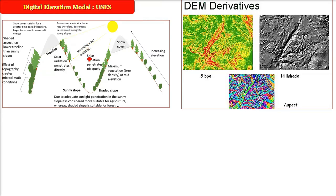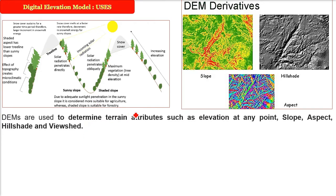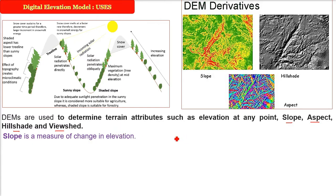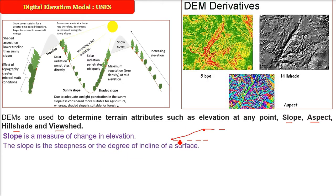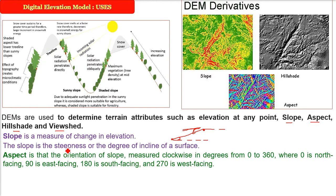What are the uses of a Digital Elevation Model? Because you get the height and the actual topography of the world, you can find out slope, aspect, hill shade, and viewshed — just a few of them. Slope is nothing but the gradient of height — it is the measure of change in elevation from one point to another. Slope is the steepness or degree of incline of a surface.